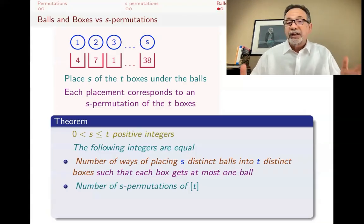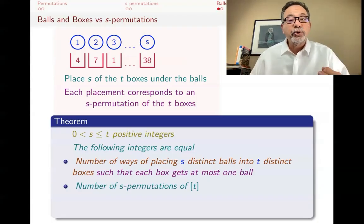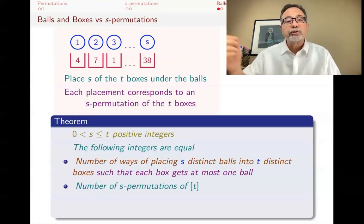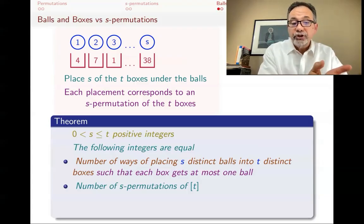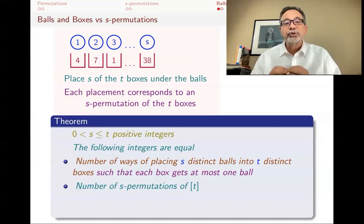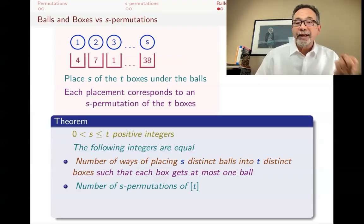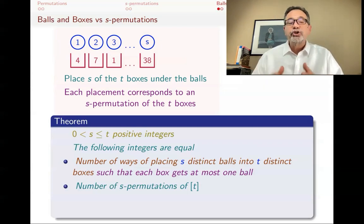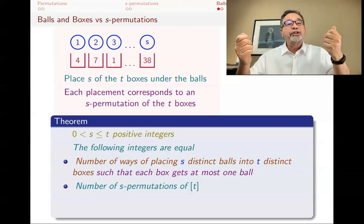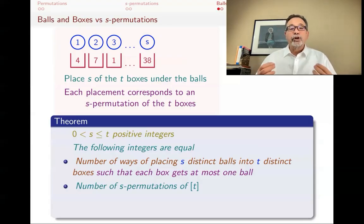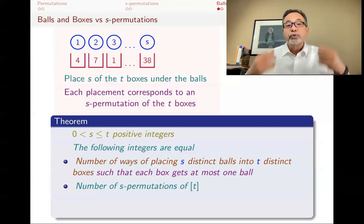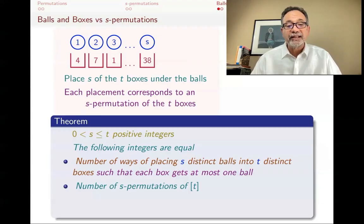On the other hand, if someone gives you an s-permutation, that's s of the boxes in some particular order, and that particular order tells you exactly where ball one goes, where ball two goes, where ball three goes, and where ball s goes. Therefore, every s-permutation of the t boxes corresponds to a placing of s distinct balls into t distinct boxes, and so these two numbers are the same. What I really did was give you a bijection — a one-to-one onto map — from the ways of placing s distinct balls into t distinct boxes to s-permutations of t. I showed it's one-to-one and onto by showing that it's invertible.